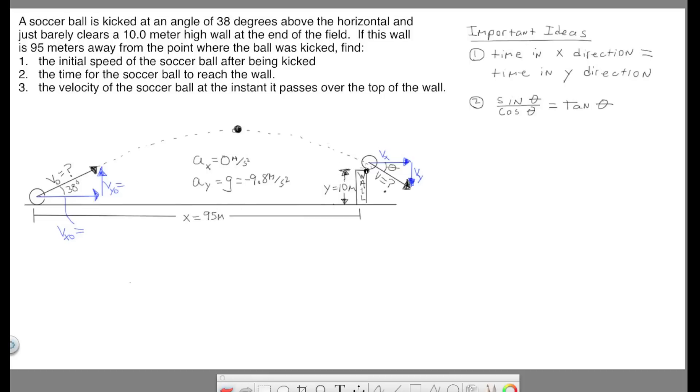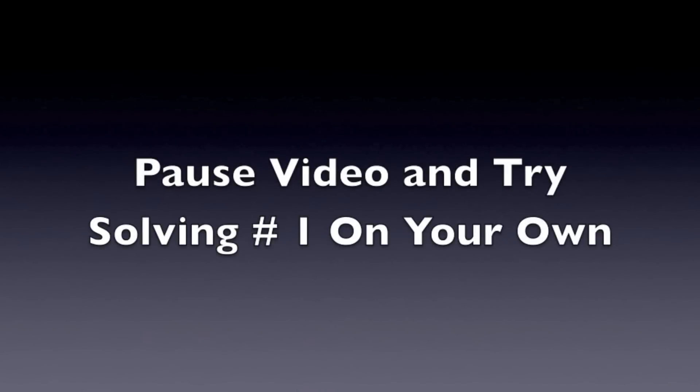And remember, all displacement cares about is starting point and ending point. So for the vertical, it's not factoring in the whole distance traveled. It's simply from the starting vertical position to the ending vertical position. So we need to use this data to figure out what this initial velocity is right here. So let's make some room on the canvas.